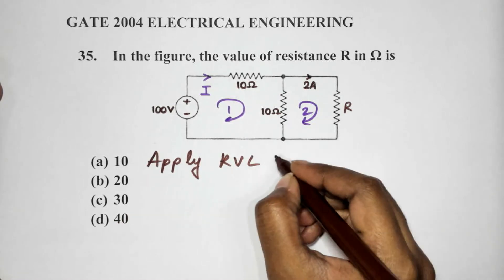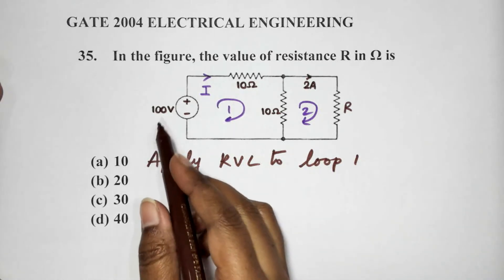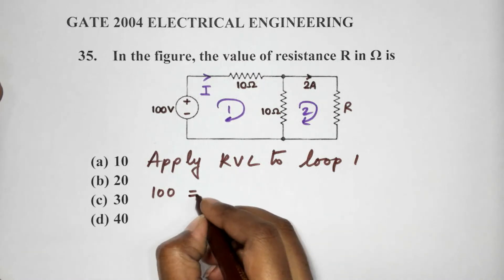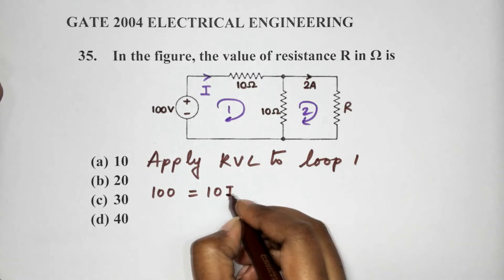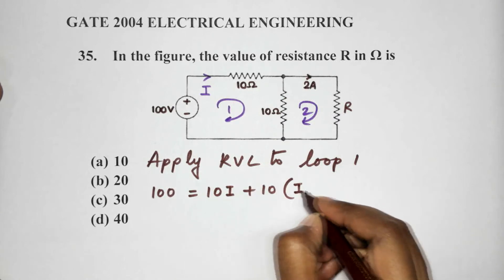Apply KVL to loop 1. So, we start with the source: 100 equals 10I plus 10 times (I minus 2).